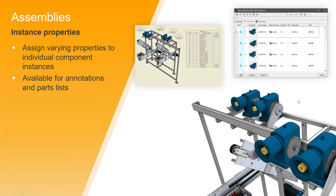If you do have instance properties on any one of your components within your assembly file, you'll see a dot coming right after the file name, and that just signifies that you have a custom property tied to those parts.